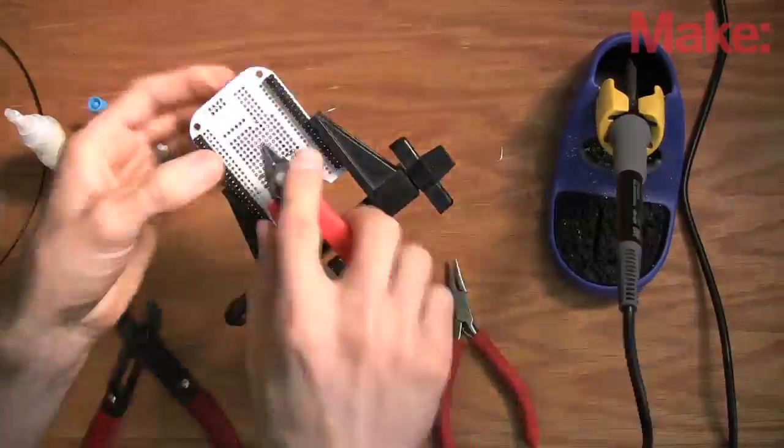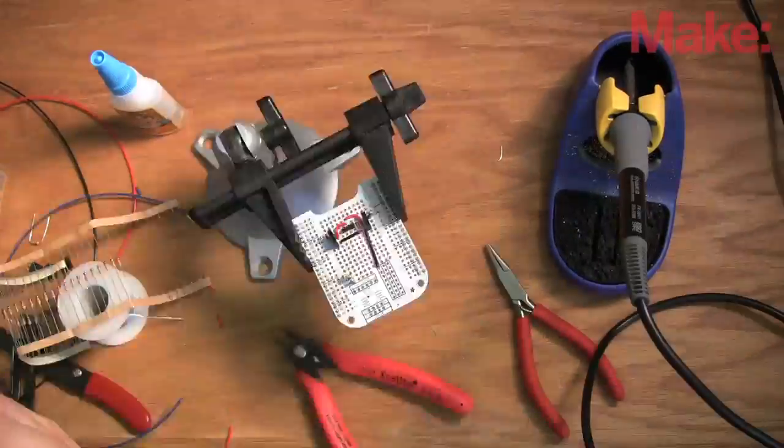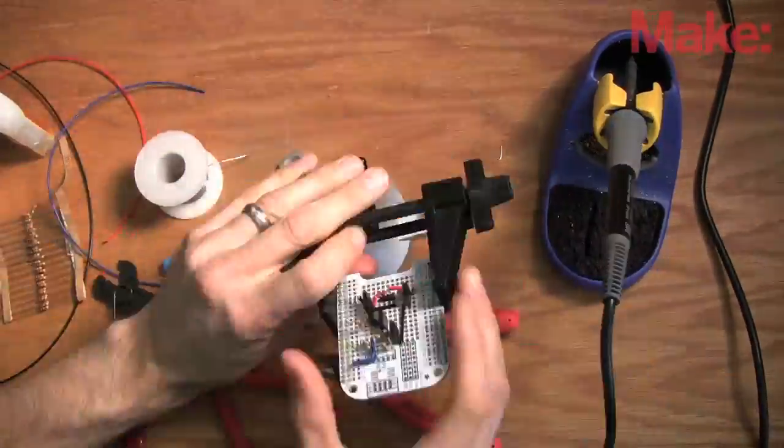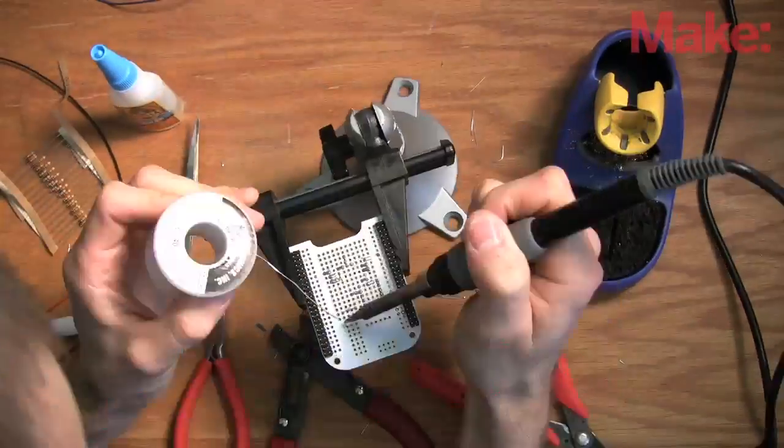The BeagleBone takes add-on boards similar to the Arduino shields, but they are called capes. I used Adafruit's prototyping cape to mount voltage dividers and connectors for the sensors and servos.